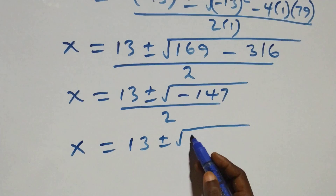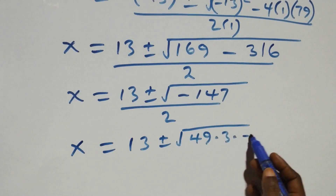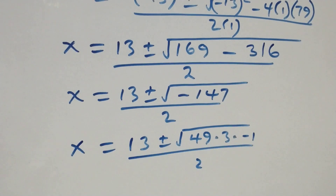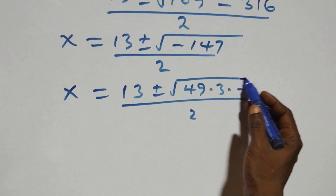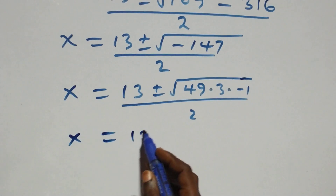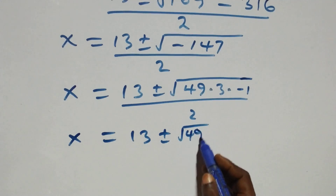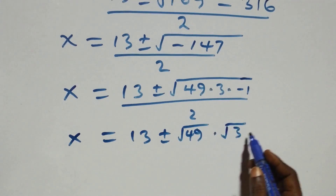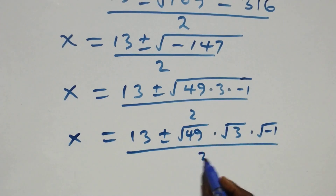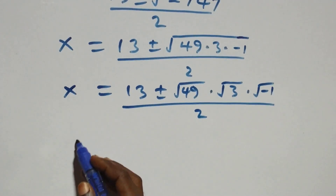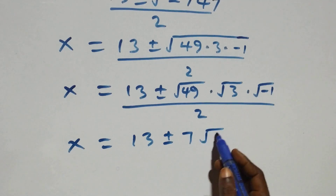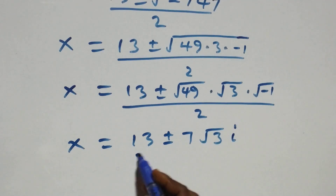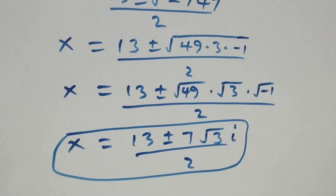We can separate this as square root of 49 times 3 times minus 1, all over 2. Breaking into separate roots, x equals 13 plus or minus square root of 49 times root 3 times root of minus 1, giving x equals 13 plus or minus 7i√3, all over 2. So here we have two complex solutions from the first case.